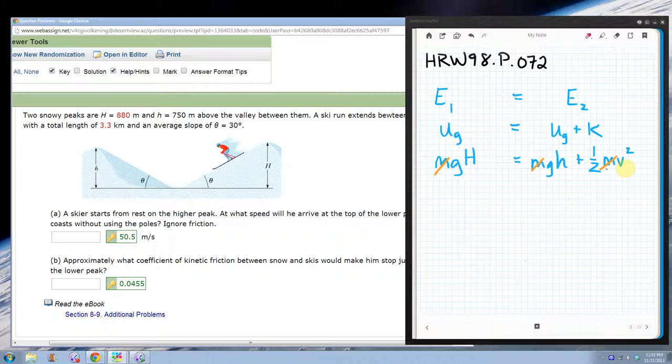Well, it's in this term and not this term, so let's get rid of this term, subtract it from both sides. And I get g capital H minus g lowercase h equals one-half v squared.